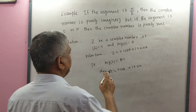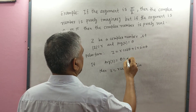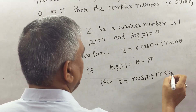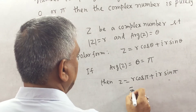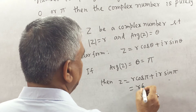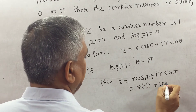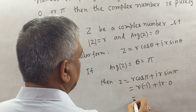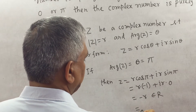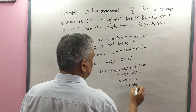If argument z = θ = π, then z = r·cos π + i·r·sin π = r·(−1) + i·r·0 = −r. This is a purely real number.